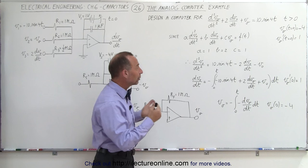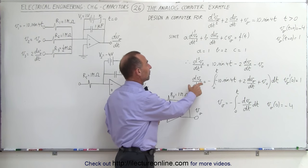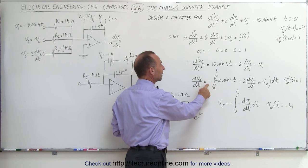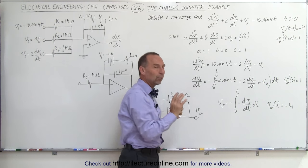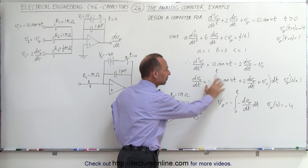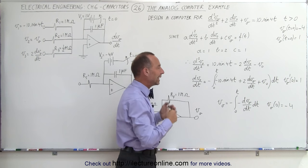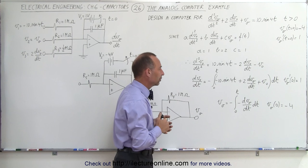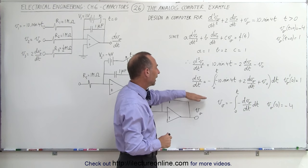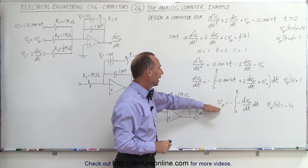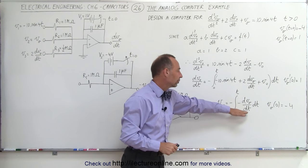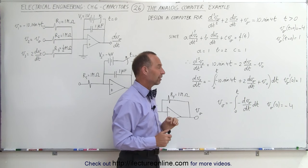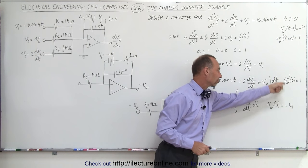If we take the integral of both sides, the first derivative of the output voltage with respect to time is the negative of that integral. We write it as the negative because an integrator circuit produces an output voltage that is the negative of the input. Taking the integral again, the output voltage equals the integral of that expression, with the two negative signs compensating, and we also apply the initial conditions.